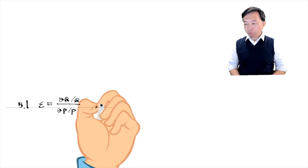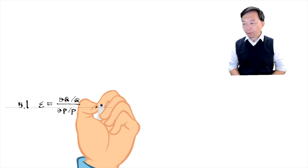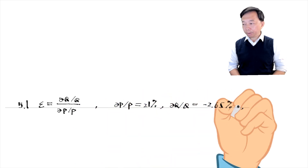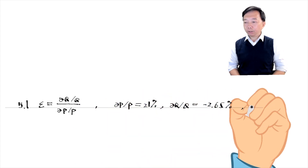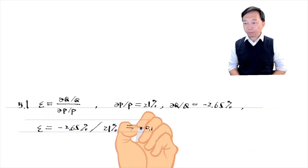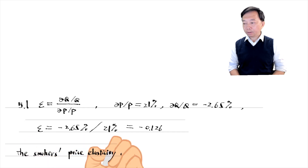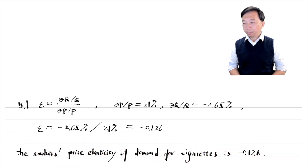We write down the definition of the price elasticity of demand. It is the percentage change in the quantity demanded in response to a given percentage change in the price of that good, holding other relevant variables constant. In this exercise, the percentage change in the price is 21 percent, and the percentage change in the quantity demanded for smoking is minus 2.65 percent. Substituting these values into the formula, we have the price elasticity of demand equal to minus 0.126.